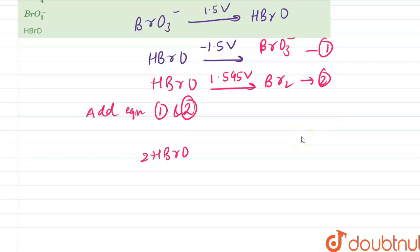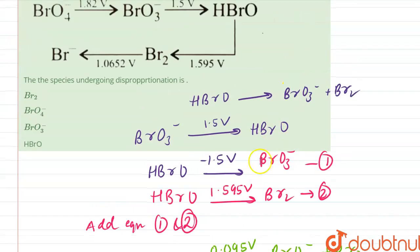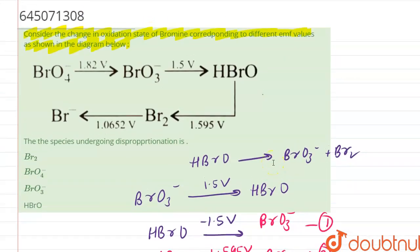...two HBrO in the presence of how many volts? 0.095. It will form BrO3 minus plus Br. Right, this is what's required, and HBrO will disproportionate into the two, that is BrO3 minus and Br.